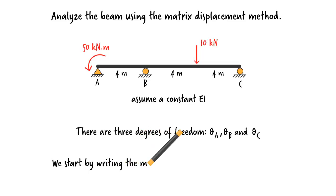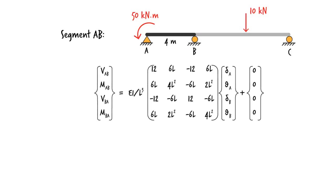To begin the analysis, we need to write the equilibrium equations for each beam segment in matrix form. Segment AB is not subjected to any loads, so its equilibrium equations are... If we substitute 4 for L, we get...